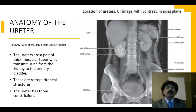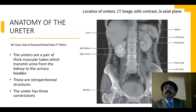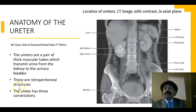The ureters are two muscular tubes that extend from the kidney to the urinary bladder, and they transmit urine from the kidney to the urinary bladder. These are two retroperitoneal structures.